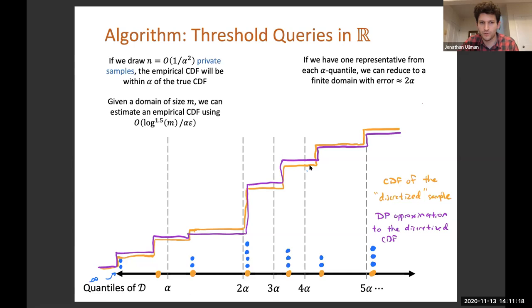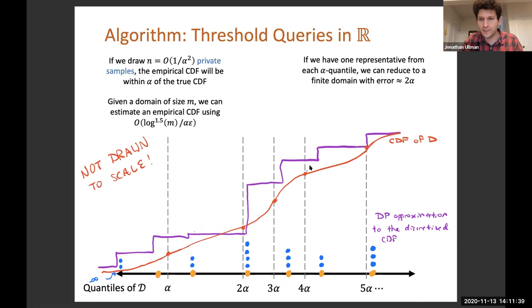So now we can just focus on approximating this orange CDF. Since it has a small domain of size 1 over alpha, we can use well-known differentially private algorithms like the binary tree mechanism to approximate this orange CDF because it's now over a small domain. Those algorithms only require a number of samples that grows polylogarithmically in the domain size. We can use some differentially private algorithm to get an approximation to the orange CDF, which is what I drew in purple. This would be the final CDF that we output.